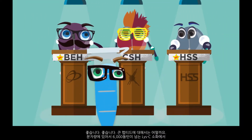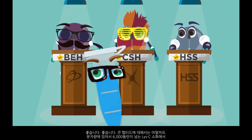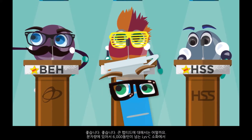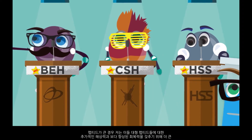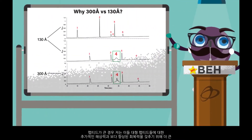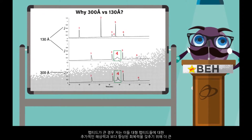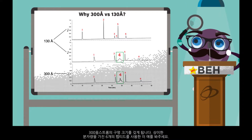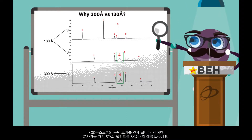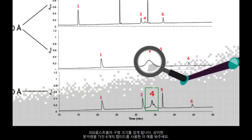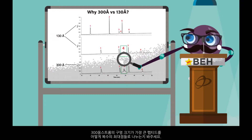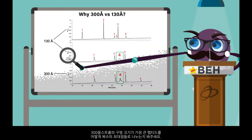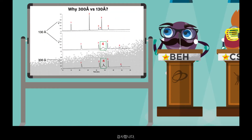So what about large peptides, like those generated from Lys-C digests that are over 6,000 daltons in molecular weight? If peptides are larger, I have a larger 300 angstrom pore size that can deliver extra resolution and improved recovery for these larger sized peptides. Look at this example using six peptides of varying molecular weights. See how the 300 angstrom pore size is capable of resolving the largest peptide into multiple peaks.